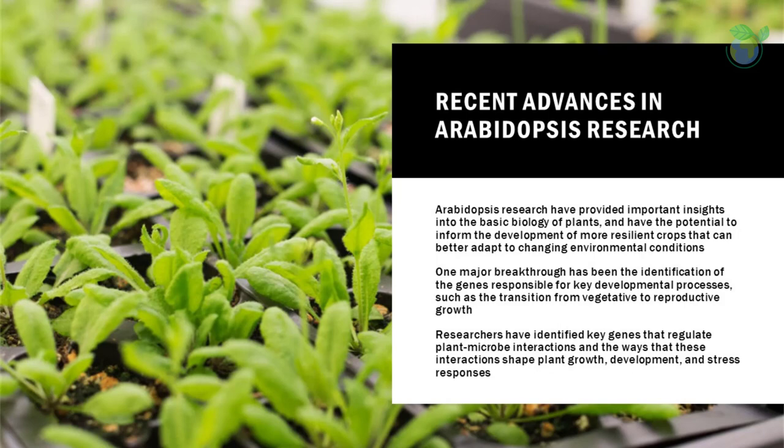Recent Advances in Arabidopsis Research. Arabidopsis research has provided important insights into the basic biology of plants and has the potential to inform the development of more resilient crops that can better adapt to changing environmental conditions. One major breakthrough has been the identification of the genes responsible for key developmental processes such as the transition from vegetative to reproductive growth. This has led to a better understanding of how plants control their growth and development in response to environmental cues such as changes in light and temperature. Additionally, researchers have made significant progress in understanding how Arabidopsis responds to stress such as drought and disease. Scientists have identified genes that play a role in disease resistance, which could have important implications for crop breeding and food security.